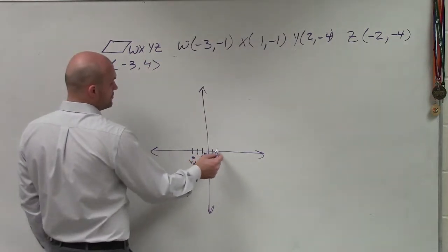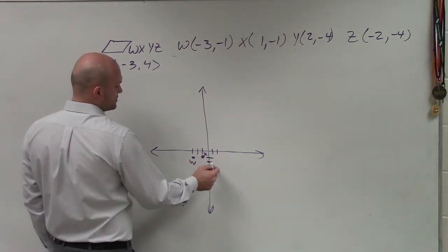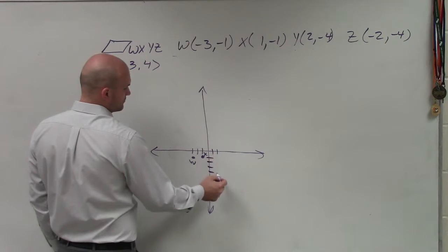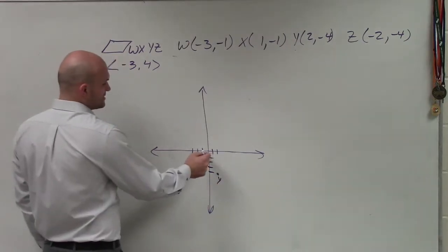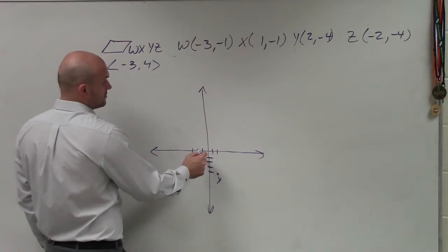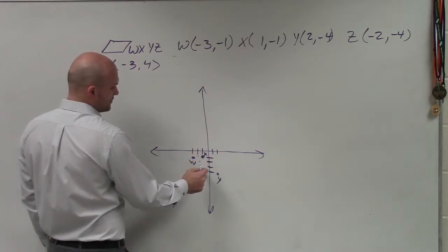Next point is 2, negative 4. 1, 2, 3, 4. That's point Y. And the last point is negative 2, negative 4. 1, 2, 3, 4.